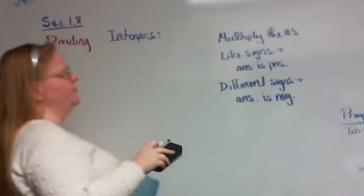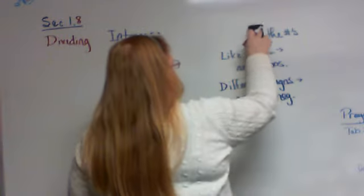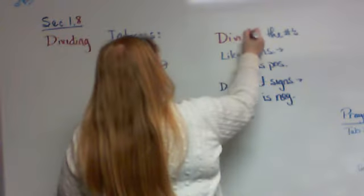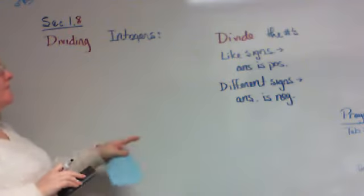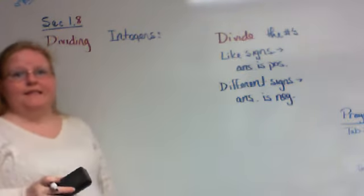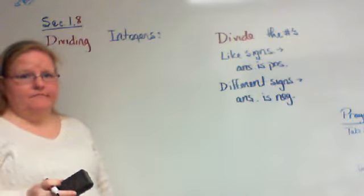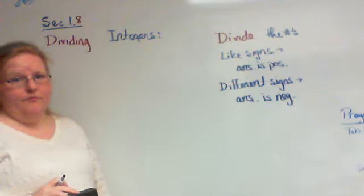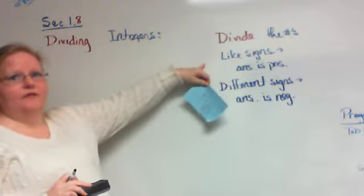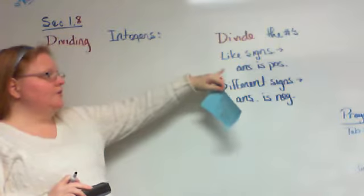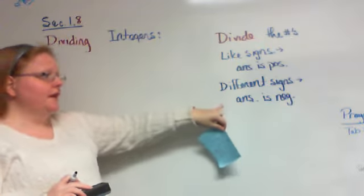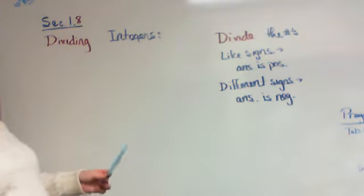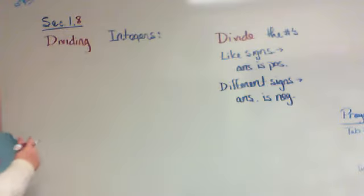And we need to talk about the rules for dividing integers. Instead of you multiplying the numbers, you're going to divide the numbers. All these other rules are exactly the same, nothing changes. In fact, you can even use the same trick if they have you dividing a lot of numbers in a row. The same trick of if it's an even number of negative signs, then your answer is going to be positive. If it's an odd number of negative signs, your answer is going to be negative. Same rules apply. All we're doing instead is dividing.